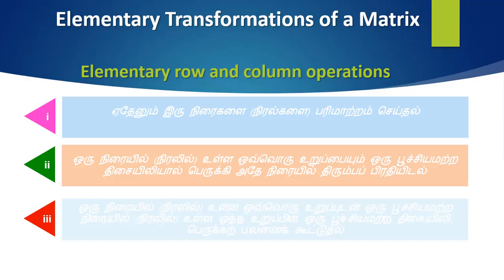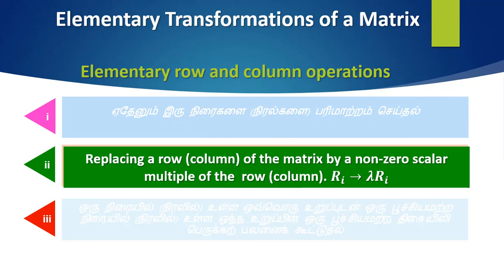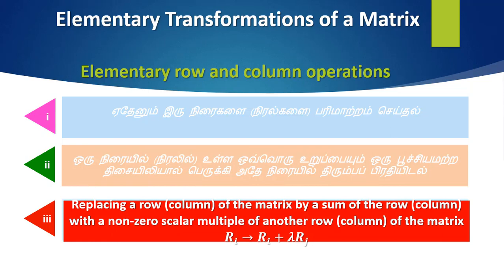First, we will learn three terms. The first one is elementary transformation of a matrix. We can interchange any two rows of a matrix. Replacing a row of a matrix by a non-zero scalar multiple of the same row. Replacing a row of the matrix by the sum of the row with a non-zero scalar multiple of another row of the matrix. These are the three elementary transformations.